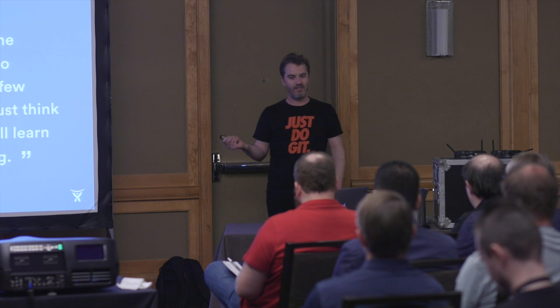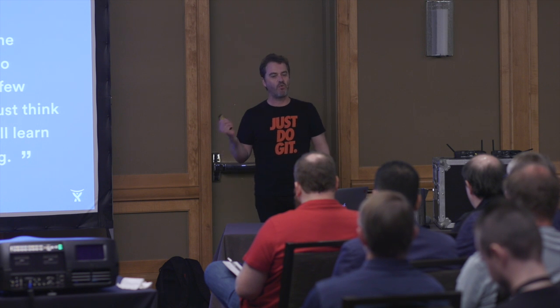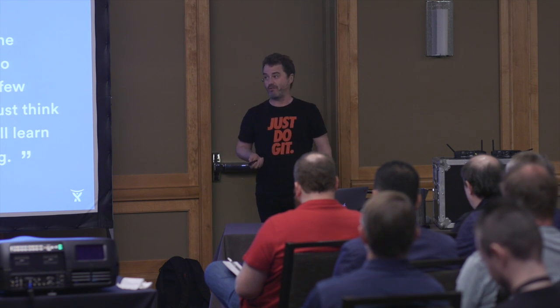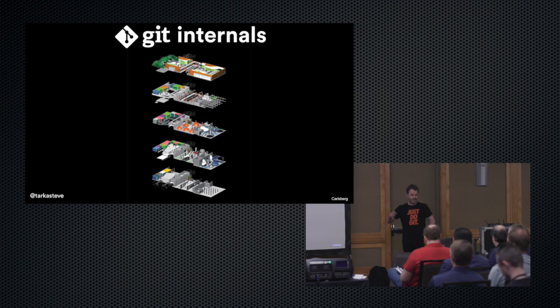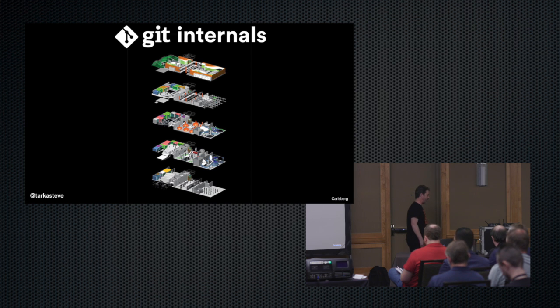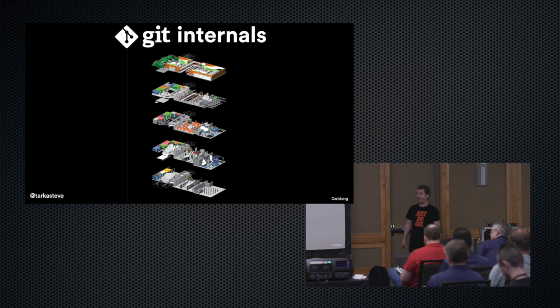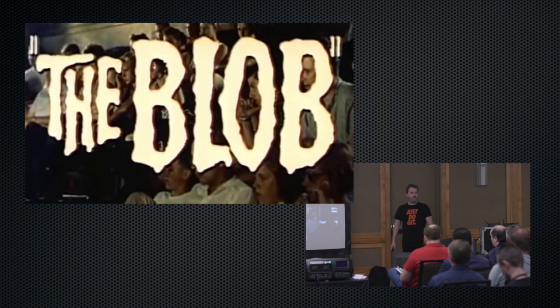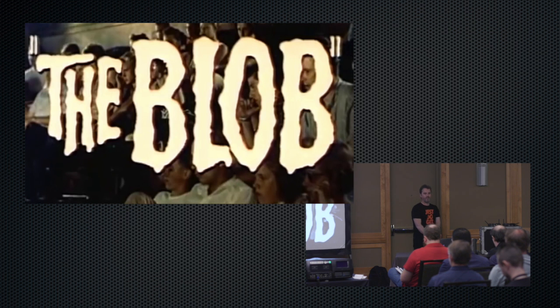Hopefully by the end of this talk you will be that really annoying guy in your team — the one who understands git and gets people out of trouble, which is really good job security. So, git internals. Let's start right down at the bottom. We're not going to talk about acyclic graphs yet or content-addressable file systems. I'm going to show rather than tell.